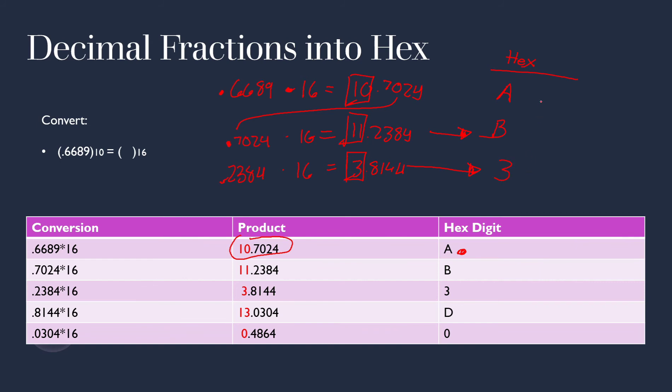So the way you read it in fraction form, you read it down. So for 0.6689 in base 10 is A, B, 3, D, and 0. I'm doing these right here. I did not show you them because we can just keep doing the same thing over and over. But this is the answer in hexadecimal format.